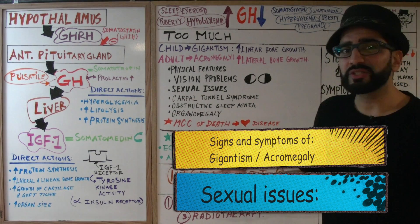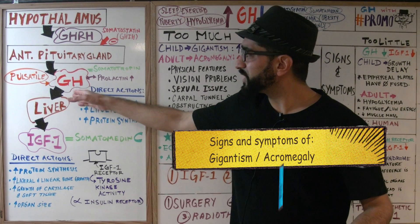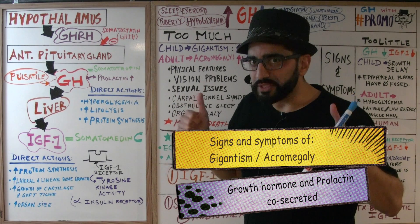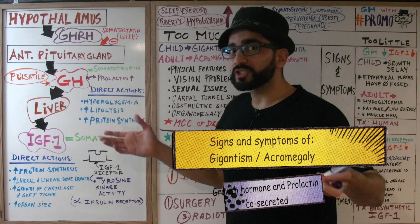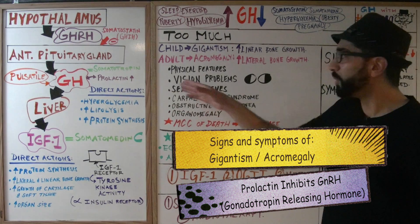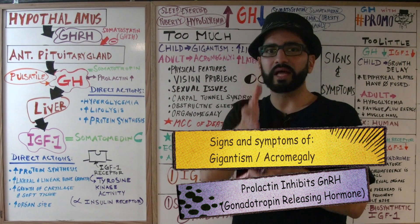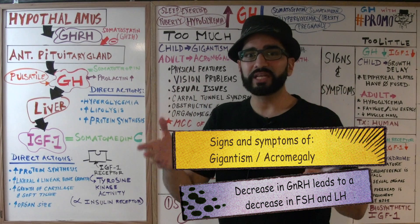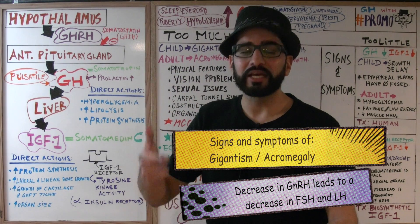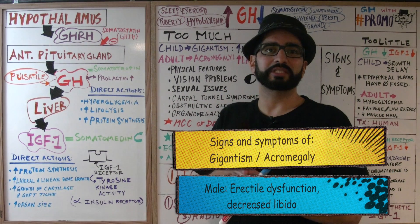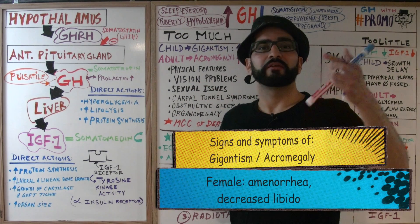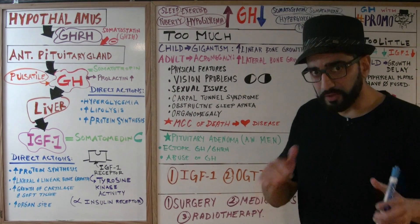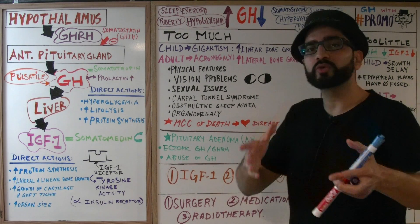Sexual issues arise because when growth hormone is very elevated, prolactin is often co-secreted. Elevated prolactin inhibits gonadotrophin-releasing hormone (GnRH), which in turn inhibits FSH and LH. In men, this causes erectile dysfunction and loss of libido. In women, it causes amenorrhea and loss of libido.